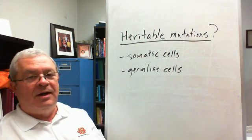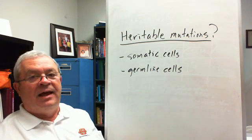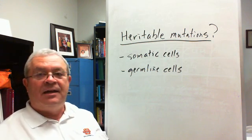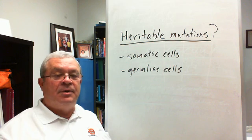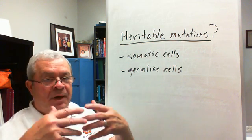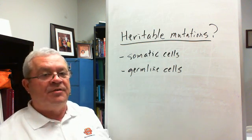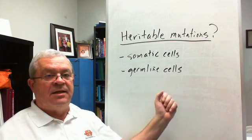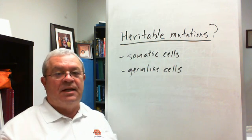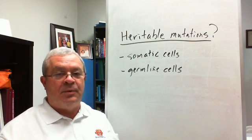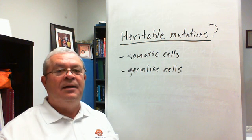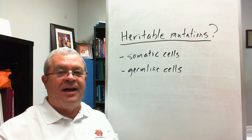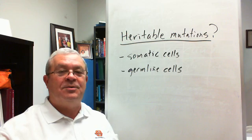What's the point? The point is that mutations occur somehow, and if they're even potentially going to be passed on to offspring, they have to happen to germline cells — cells that become egg cells or sperm cells. And there you have it.